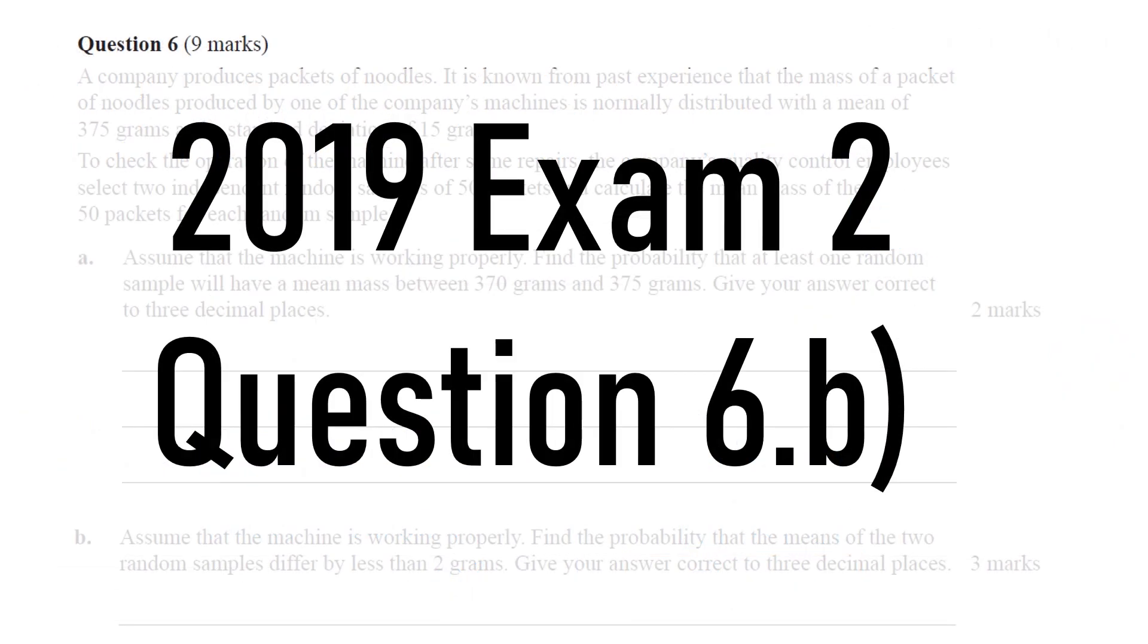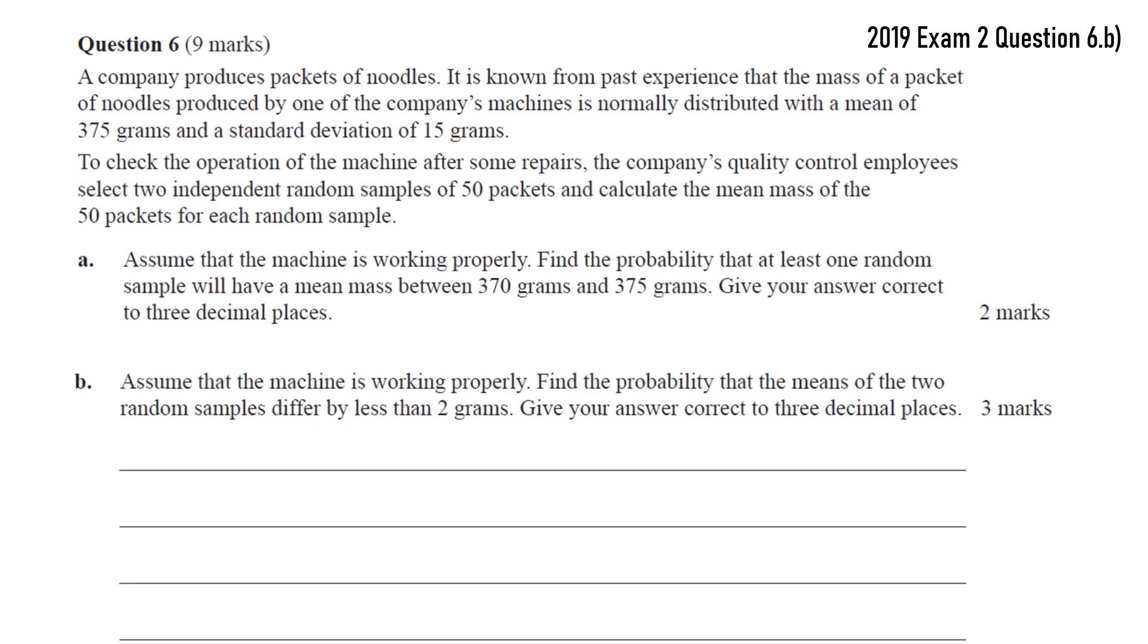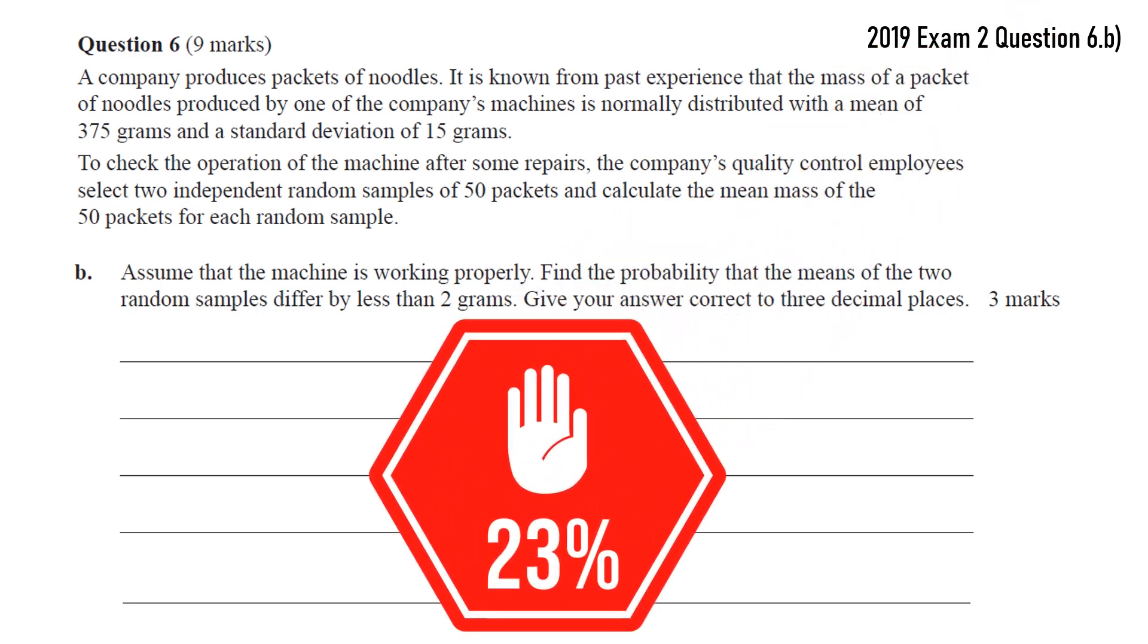Alright, next up, same year, exam 2, question 6b. It's another food question. A company produces packets of noodles and so on with the normally distributed. The one that students found hard was part b. And this one had a success rate of 23%.